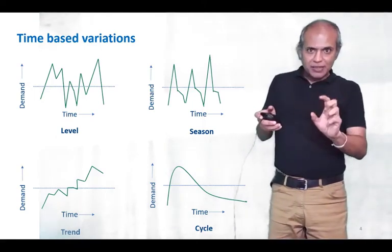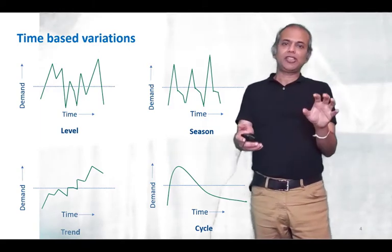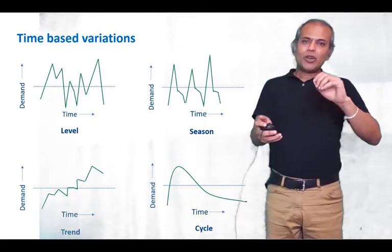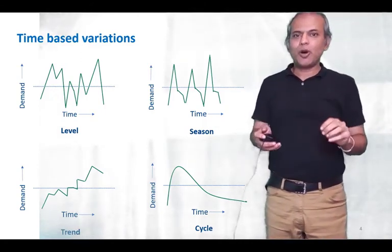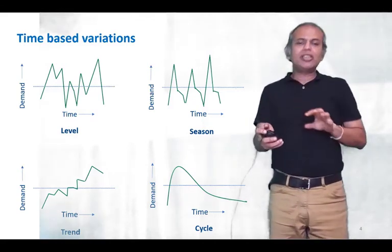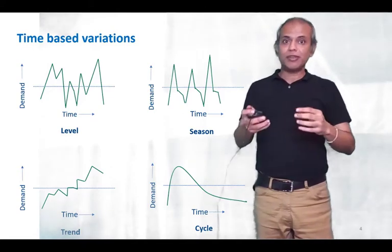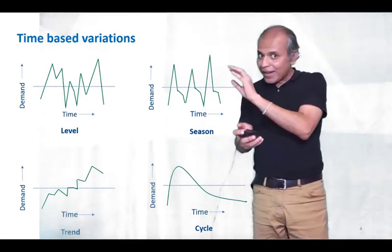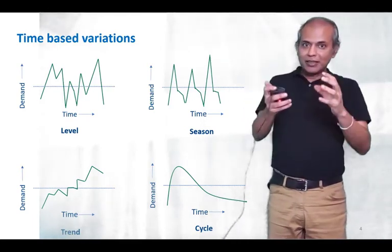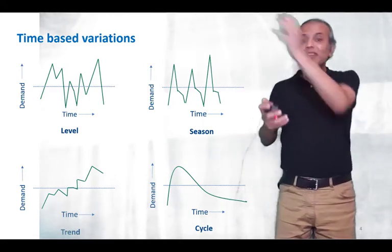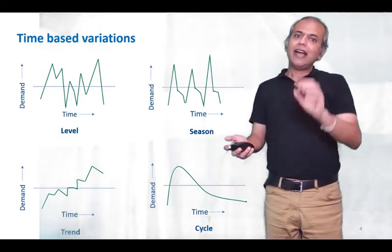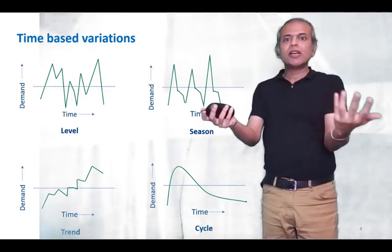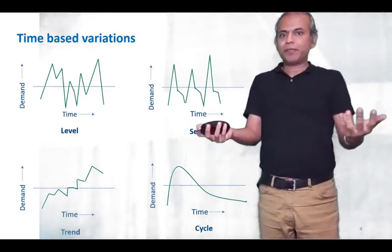So what happens is the demand signal that a particular product generates is actually a combination of all these four things that you see right here. So what we need to do here when we talk of selection of a model is to identify which out of these four variations exist. It could be a combination of level and season, level and trend, or level trend and season. So given our span and scope of forecasting, we need to get the right data and plot the data to see which of these four patterns do we see in our data and then use the appropriate method of forecasting to generate forecasts for our product.